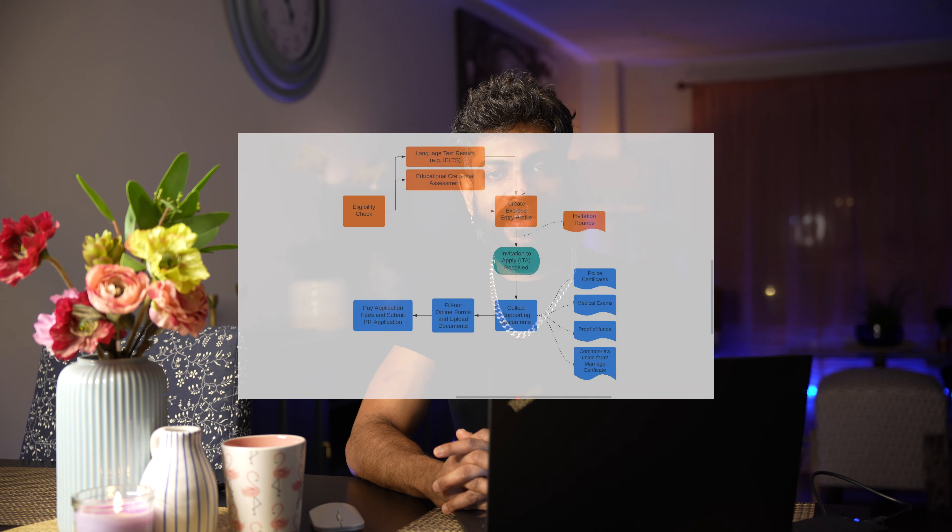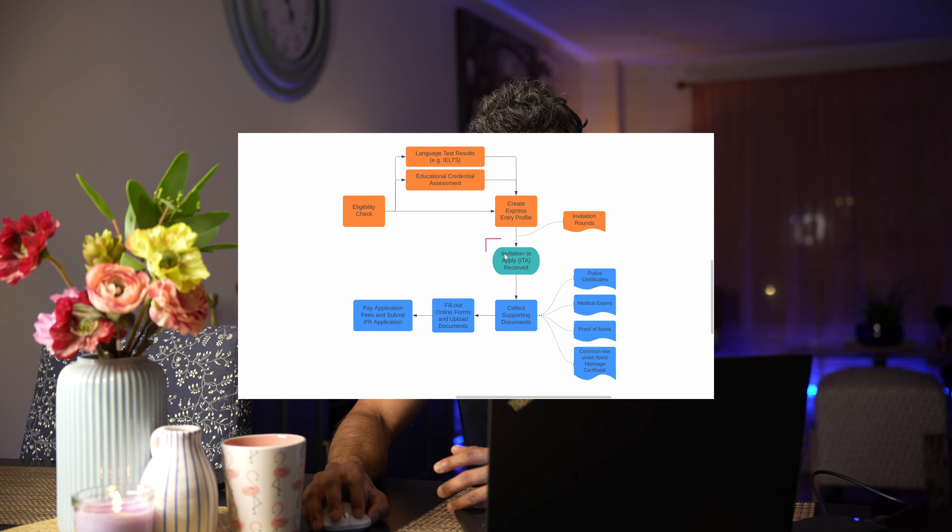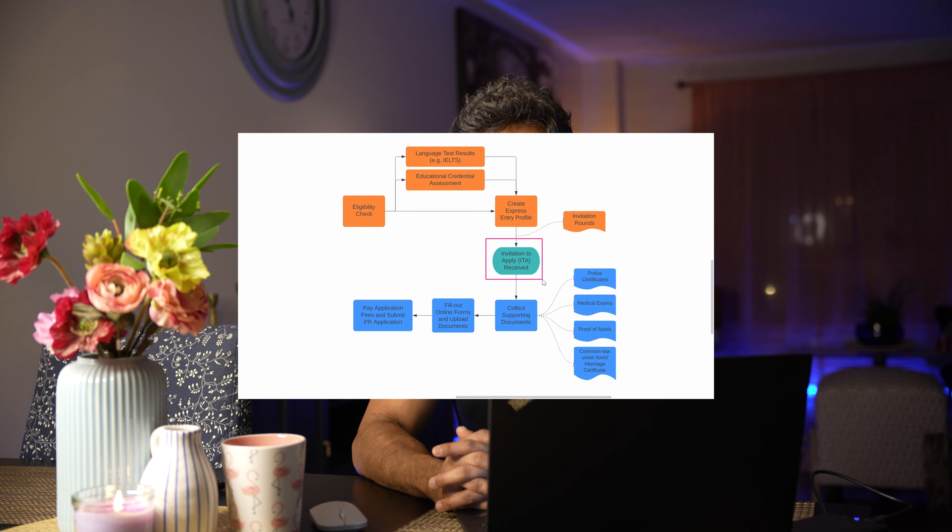We will add a pool of candidates. In the next step, we will add invitation rounds. We will create a Permanent Residency application and submit the application.